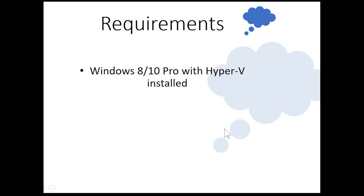For our installation requirements, we need Windows 8 or Windows 10 Professional with Hyper-V installed. You can also use Windows Server 2008, 2012, or 2016. You'll need WinRAR because the PFSense download comes as a .gz file, so you need it to extract the ISO file. And of course, you need the PFSense ISO file itself.